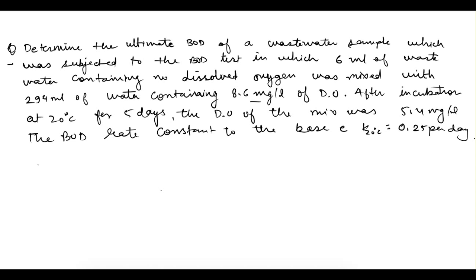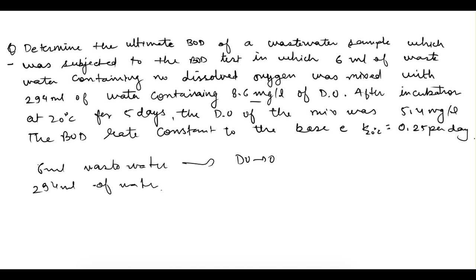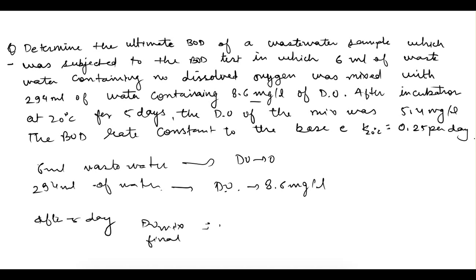So 6 ml of wastewater is there initially and the dissolved oxygen in it is 0. And 294 ml of dilution water is there in which the initial dissolved oxygen is given as 8.6 mg per liter. After incubation at 20 degrees Celsius for 5 days, the DO of the mix — that is DO final — is given as 5.4 mg per liter, and we have to find out the ultimate BOD.